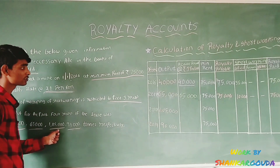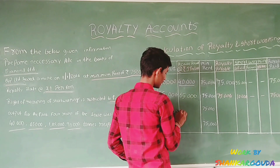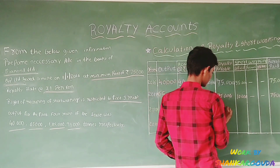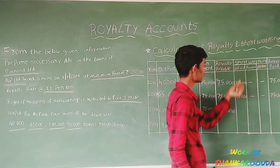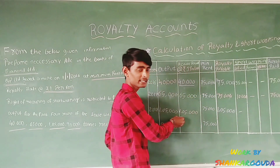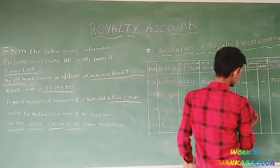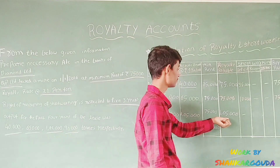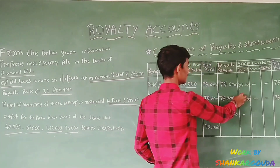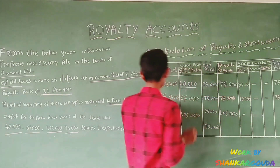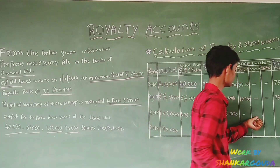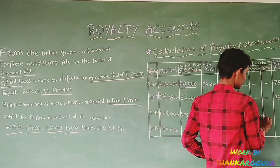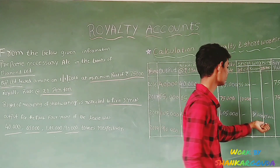In 2018, output is 1,05,000. Royalty is 1,05,000 into 1 equals 1,05,000, which equals the minimum rent. Here, 35,000 is the short working from 2016. He recovered 35,000 from the first year's short working. In 2016 he had a loss of 35,000; he recovered that and the remaining 10,000 short working from 2017 is also recouped. He paid 75,000.